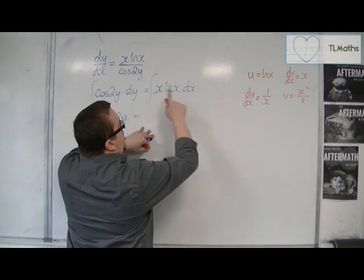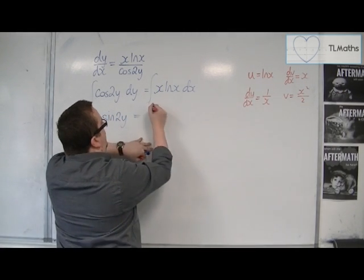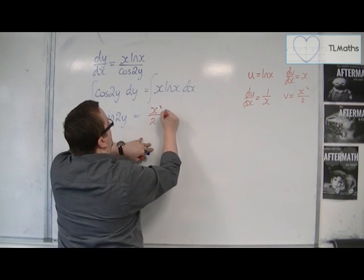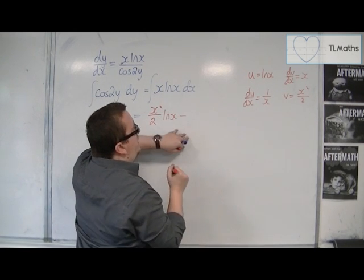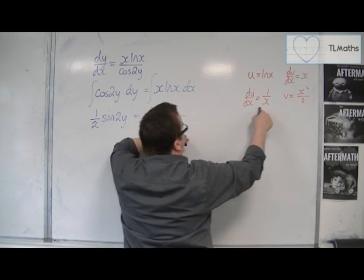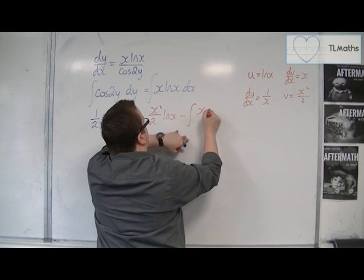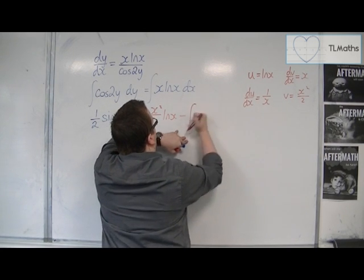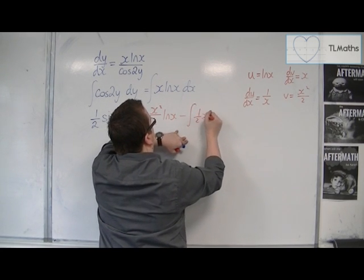So we've got u times v, so x squared over 2 log x, take away the integral of v du by dx. So x squared over 2 times 1 over x is x over 2, or just a half x, I'll write that as a half x, dx.